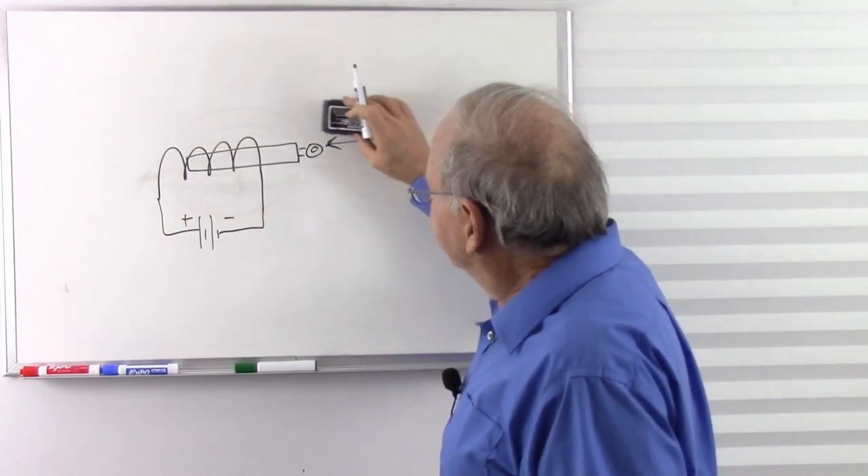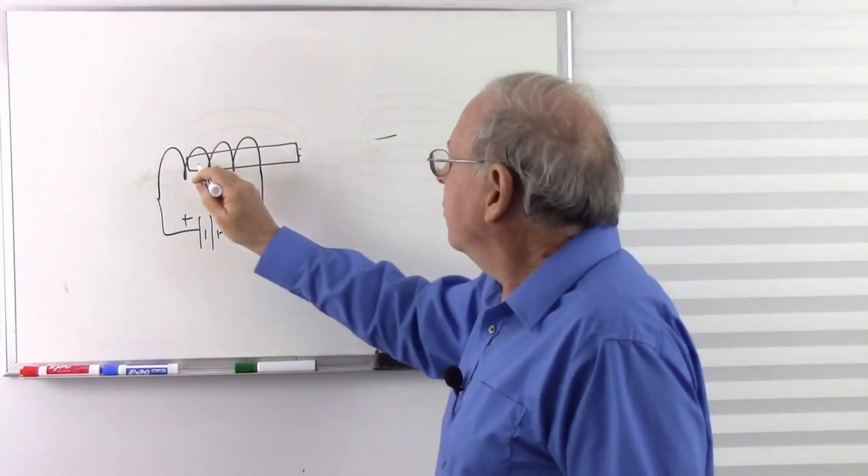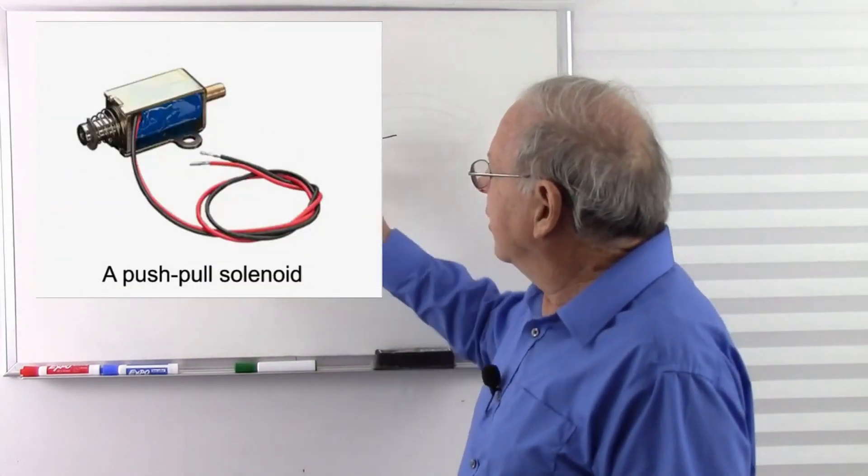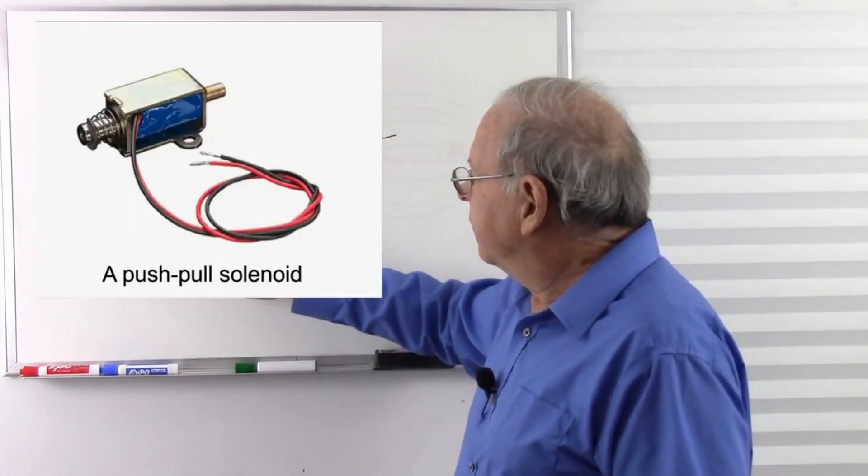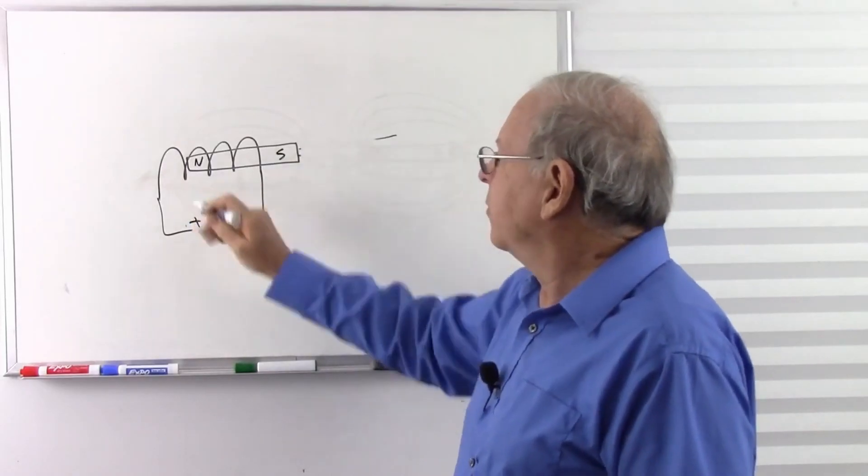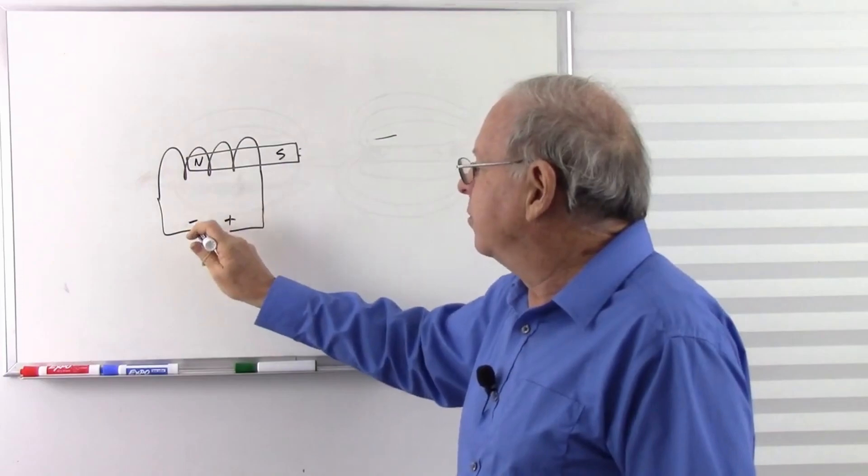We could also have an actuator that is polarized. It's magnetic. Now we could either pull or push. If we energize it one way, it's going to pull. If we flip the polarity. So one way it pulls in, flip the polarity and it pushes out.